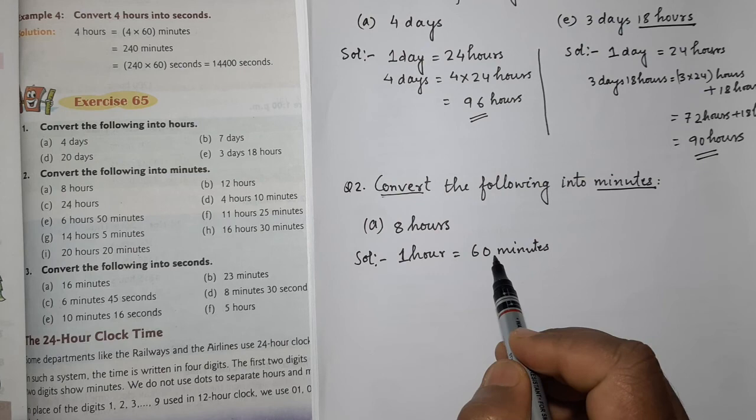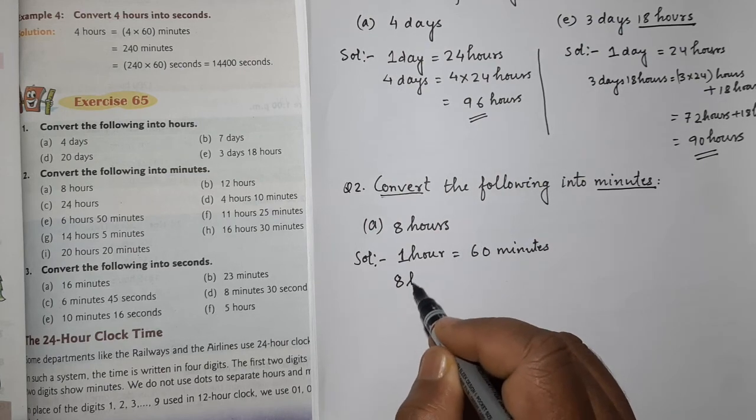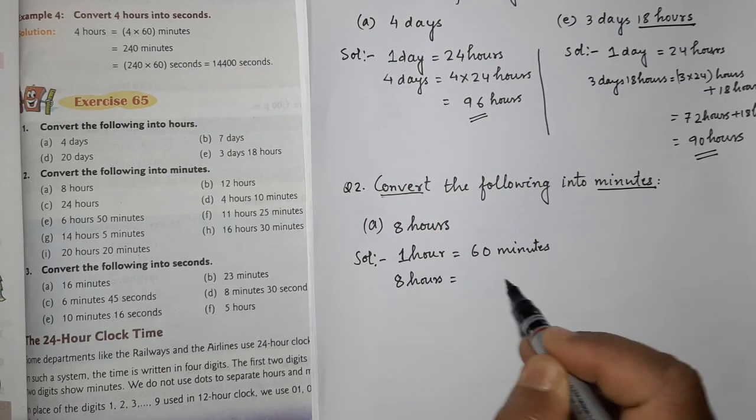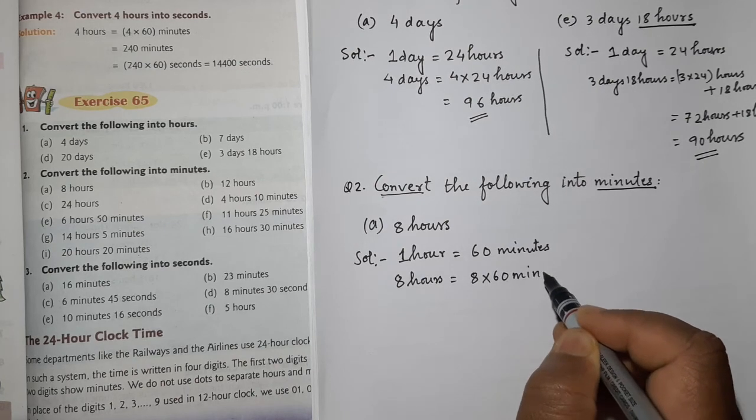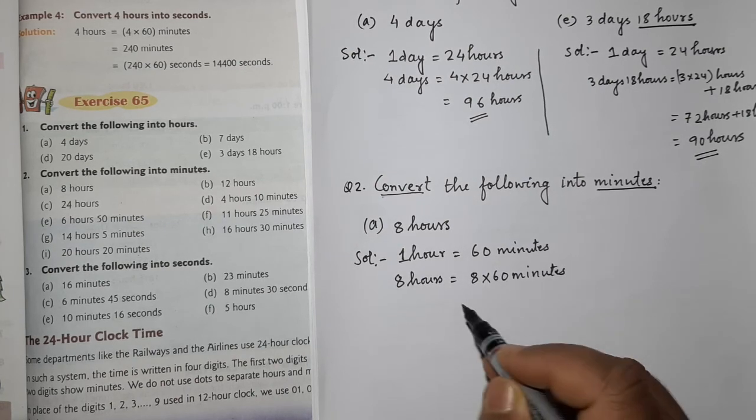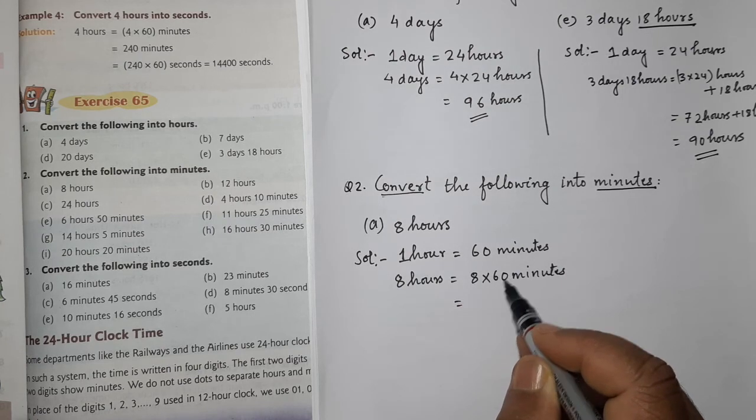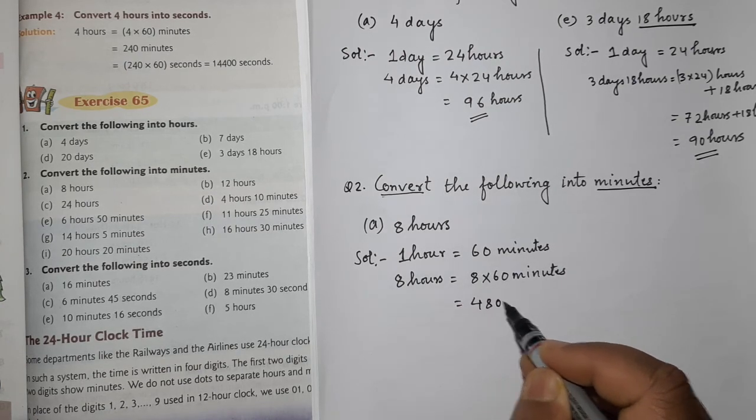So in 8 hours, how many minutes are there? So we will write 8 hours equals 8 multiply 60 minutes. So when I multiply 8 with 60, what will I get? 480 minutes.